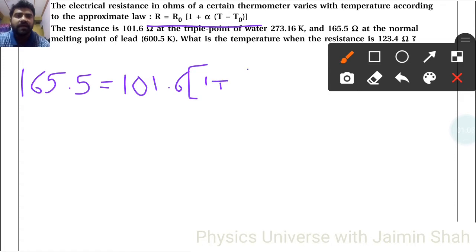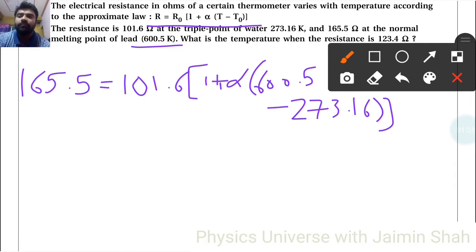Then 1 plus α (we don't know for the material) times (T - T₀). Now T is 600.5 minus the triple point 273.16. We need to find alpha first.